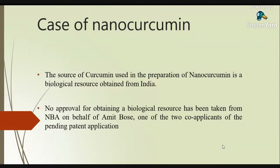The source of curcumin used in the preparation of nano-curcumin is a biological source obtained from India. No approval for obtaining a biological source has been taken from NBA — National Biodiversity Authority — on behalf of Amit Bose, one of the two co-applicants of the pending patent application.